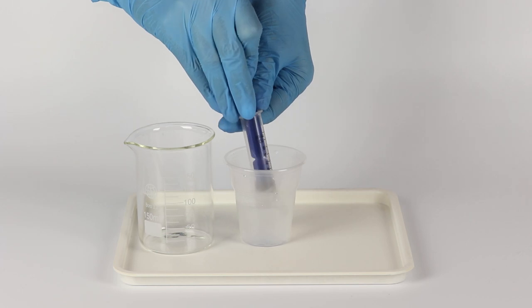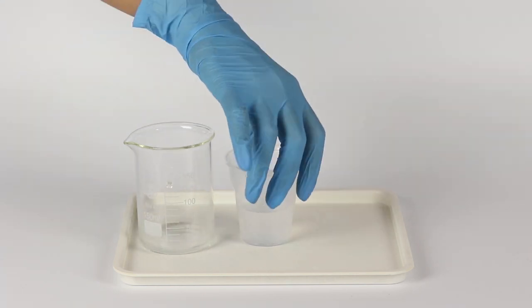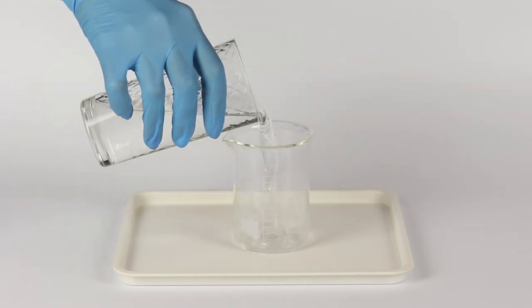Transfer five milliliters of the starch solution to the beaker using a syringe. Fill the beaker with cold water up to the 75 milliliter mark.